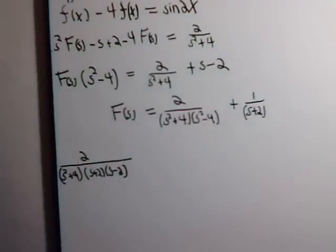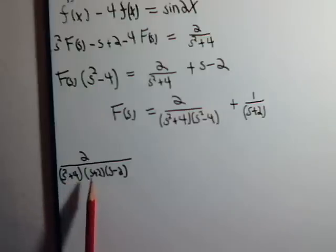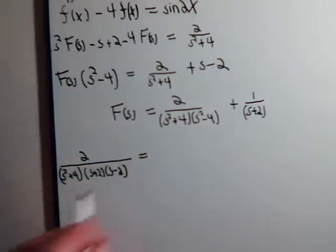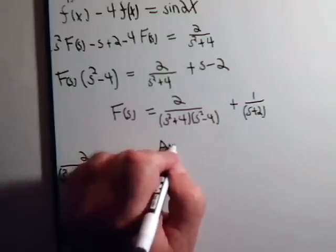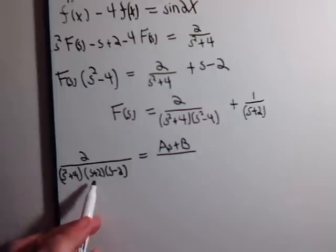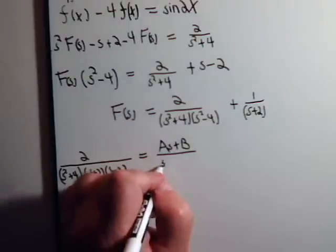So we have 2 divided by s squared plus 4. We can't simplify that any further. This is the difference of two squares. So let's see. s squared plus 4, that's a quadratic factor. And then we have s plus 2, s minus 2. Both of those are linear factors. So this is going to be equal to, for the quadratic term, it's a s plus b divided by s squared plus 4.